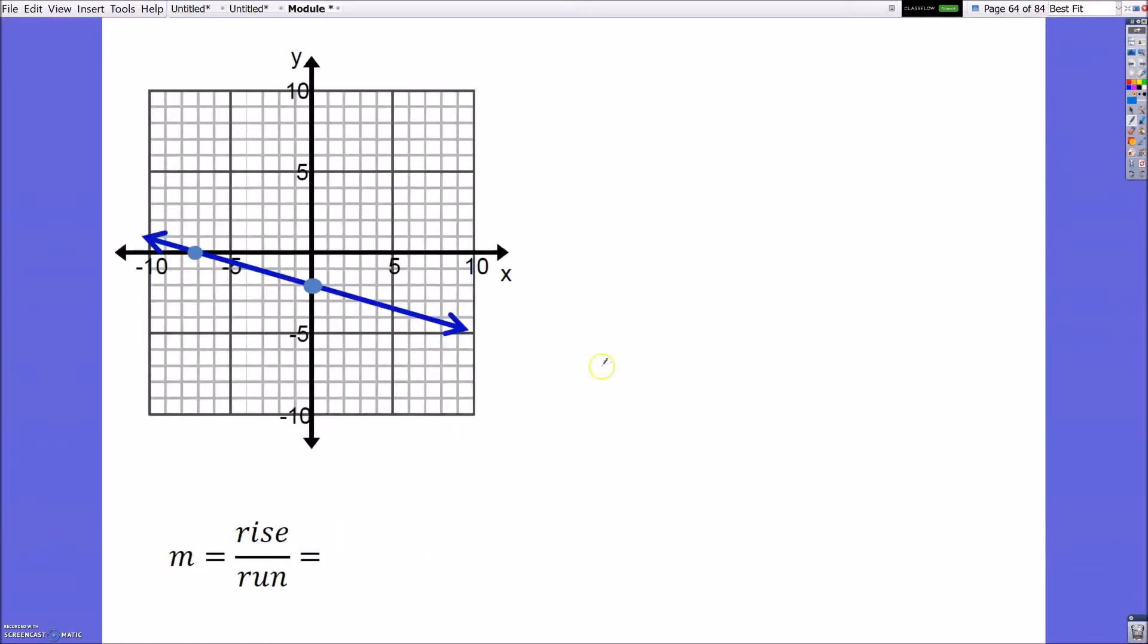Now, looking at this next one, if I just wrote my name on it, my name would be going down. When it's going down, it will have a negative slope. That's just a little hint to help you guys out.